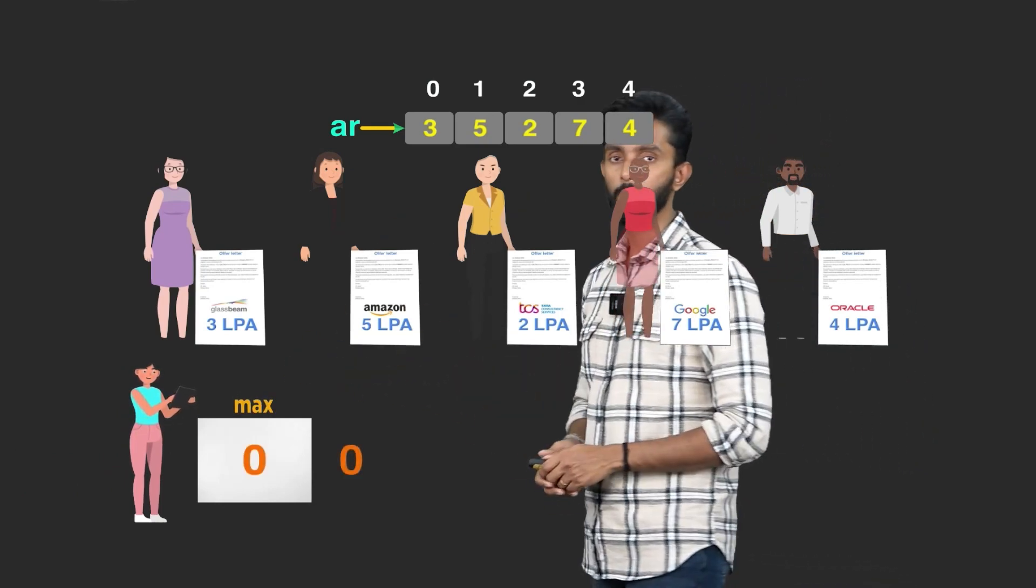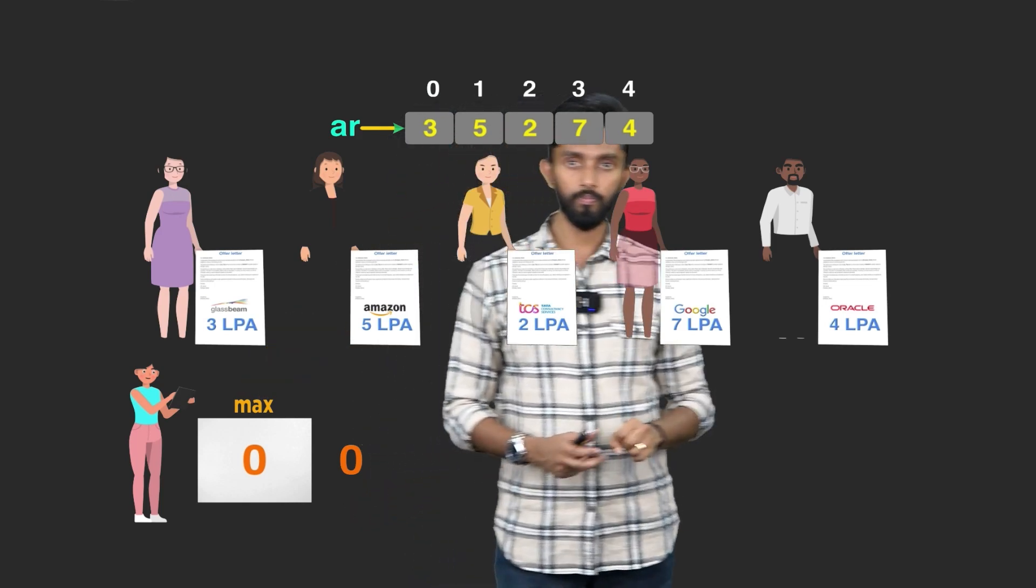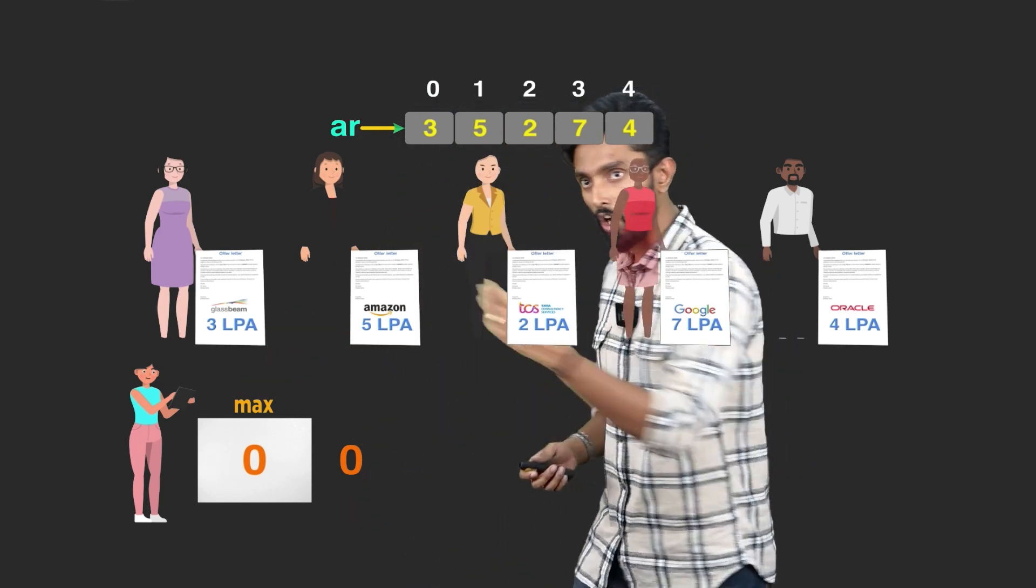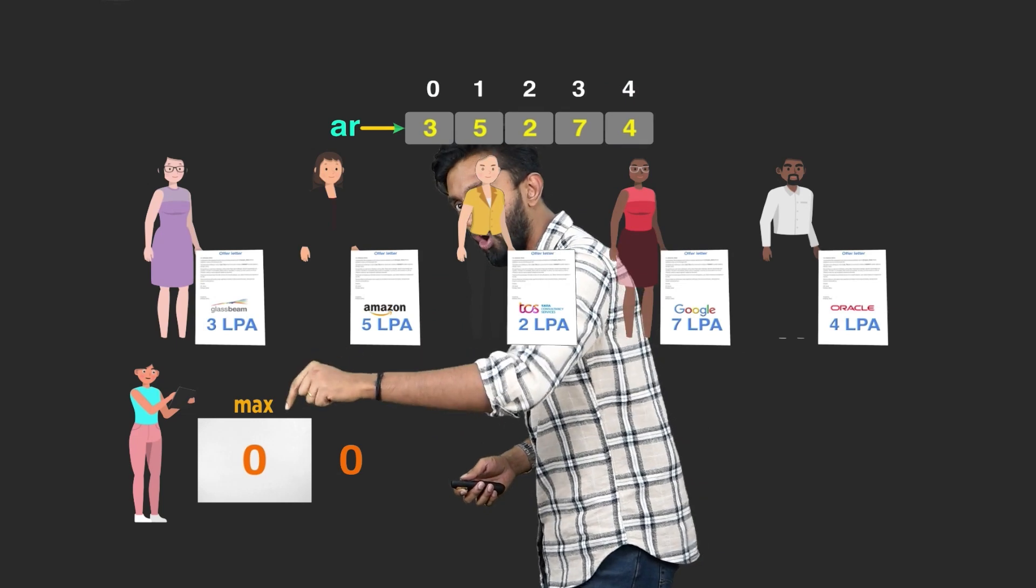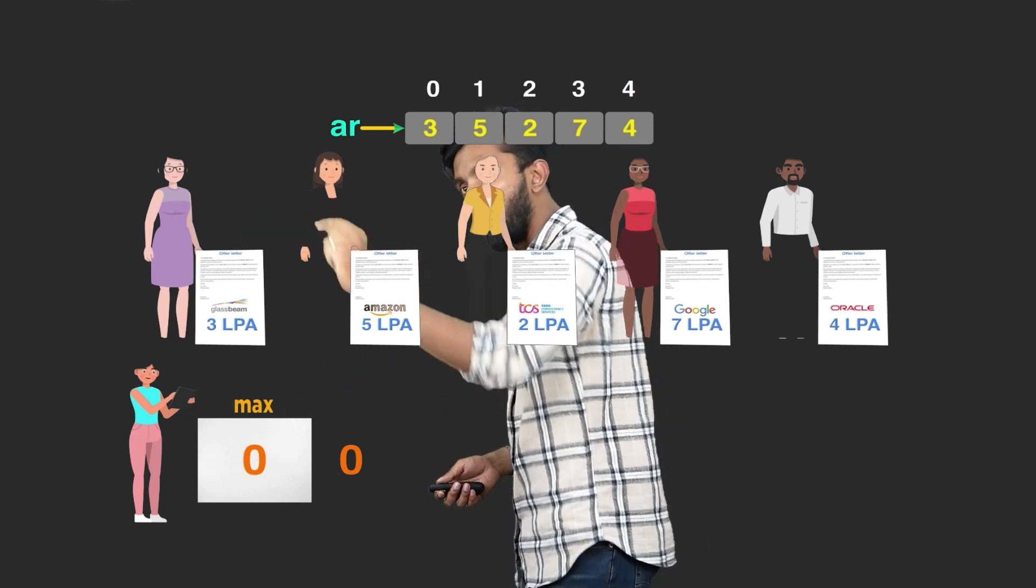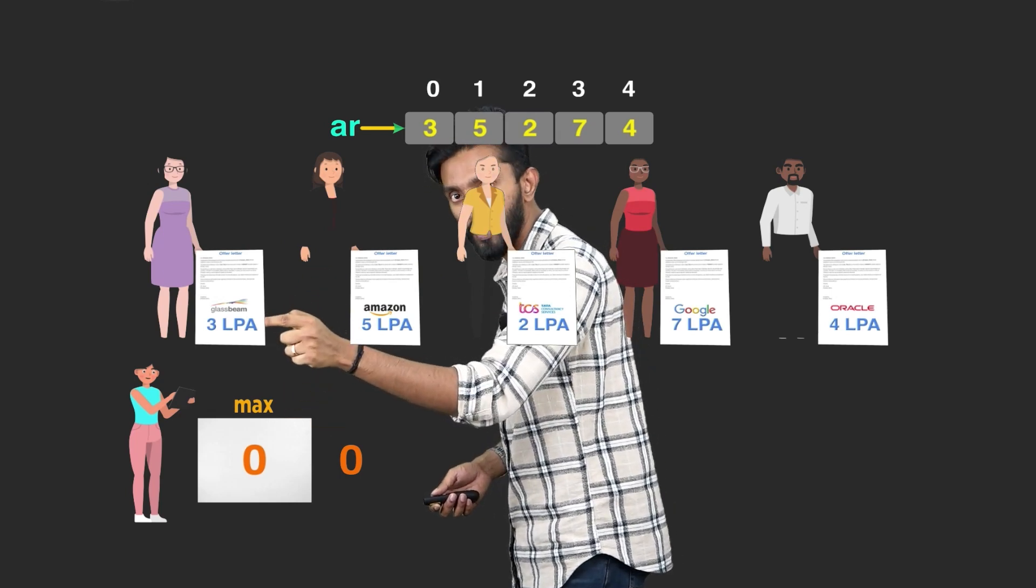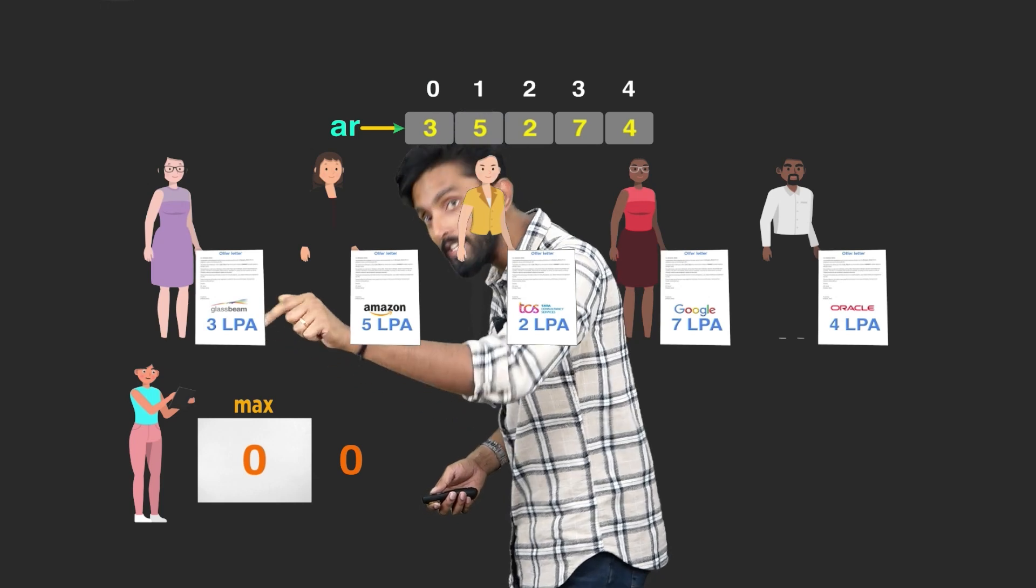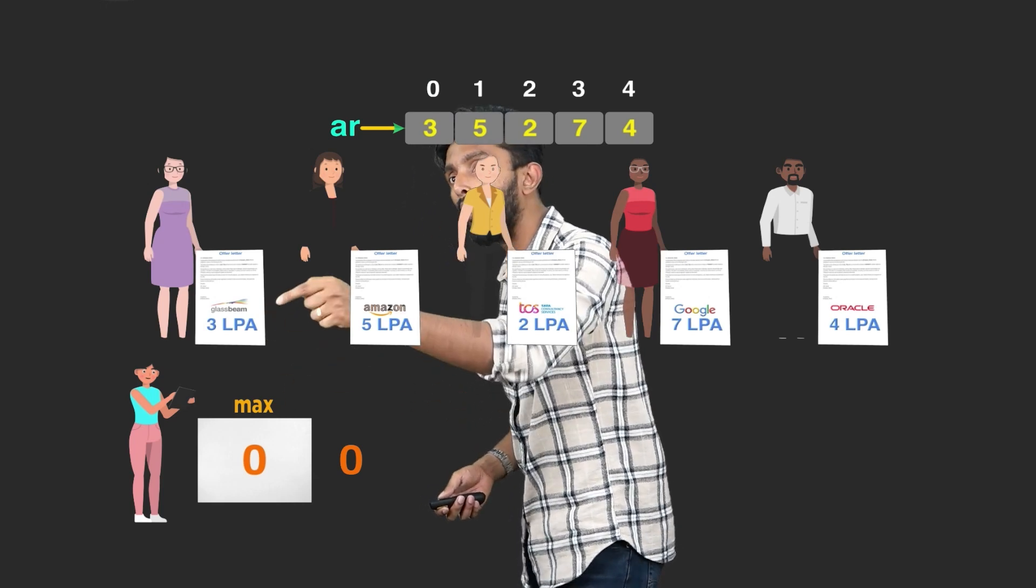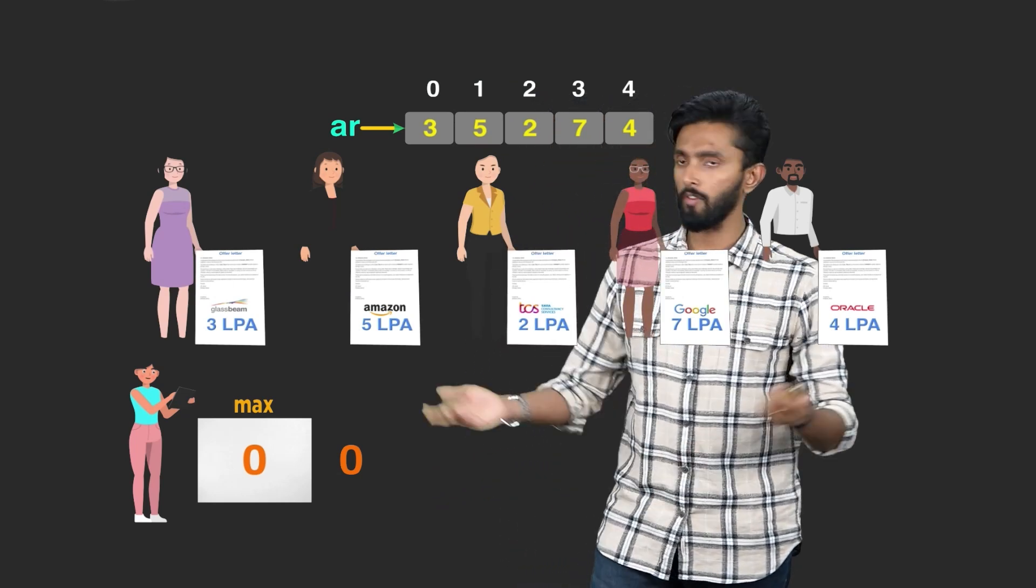But unfortunately, computer can't work like that. Computer will only work step by step. So step by step, you should instruct the computer how it can find the highest salary. For this very simple, I will employ one person. We will call that person as Max. I will tell Max, initially the value inside you should be 0.